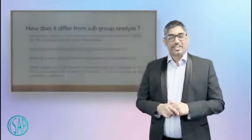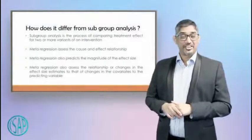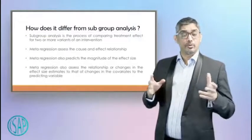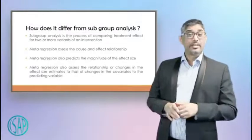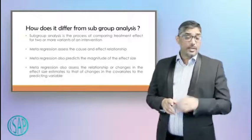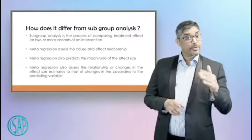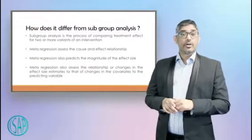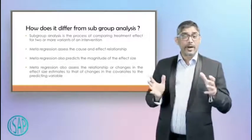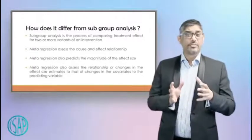That's interesting. I was wondering — is subgroup analysis superior to meta-regression but inferior to meta-analysis? Subgroup analysis is the process of comparing treatment effects for two or more variants of an intervention. The intervention remains the same but there are two or more variants — for example, adults differ from children, but the intervention can be the same vaccine. Or male group versus female group — subgroups — but the intervention could be the same vaccine. Subgroup analysis is meant to reduce heterogeneity because you are combining the effects of similar kinds of groups together.